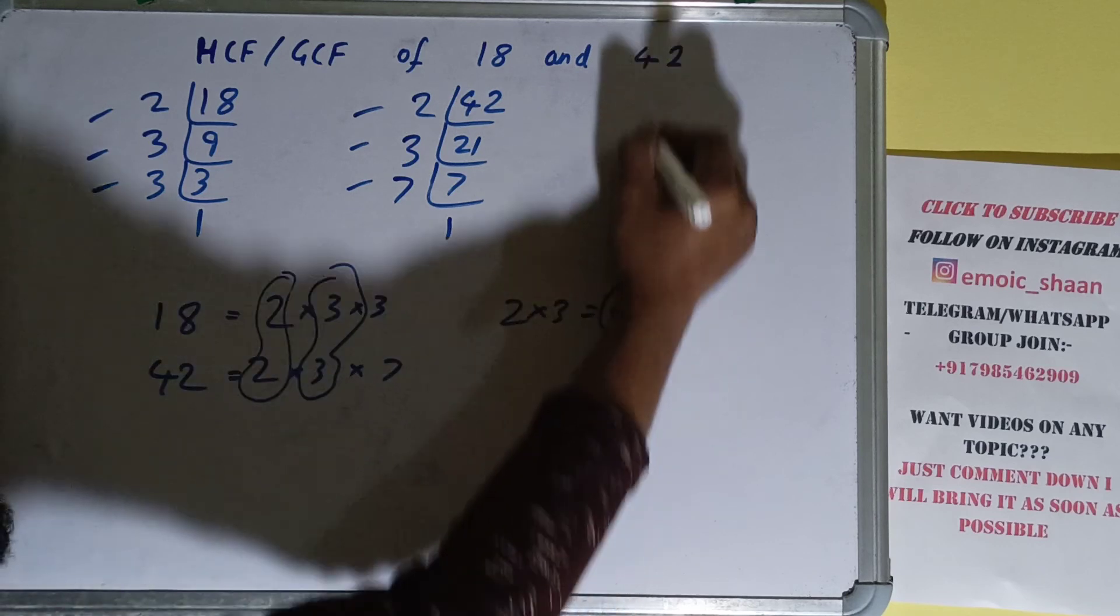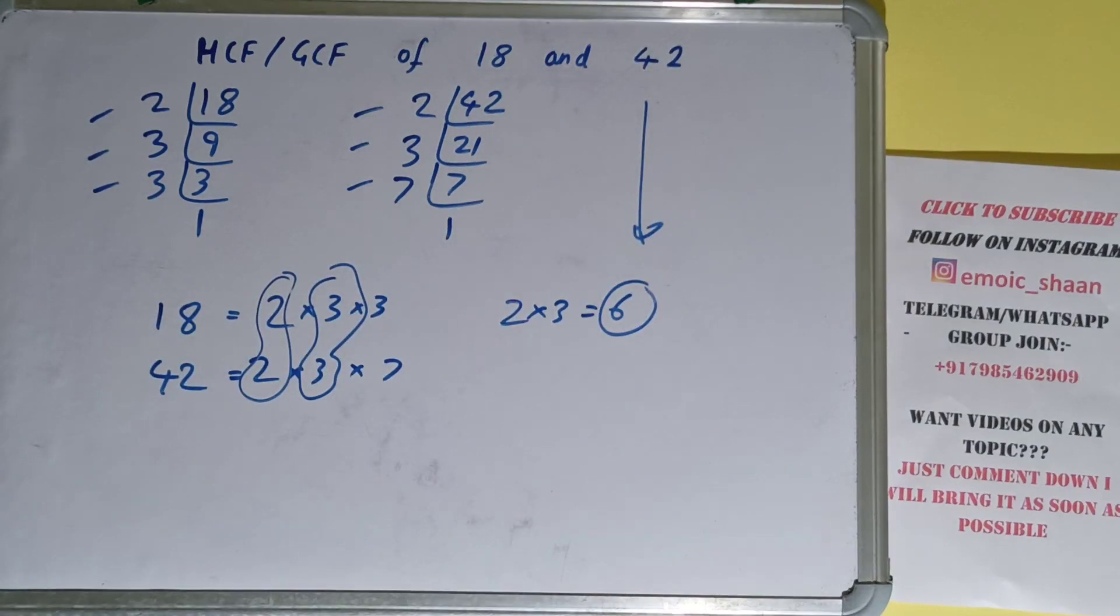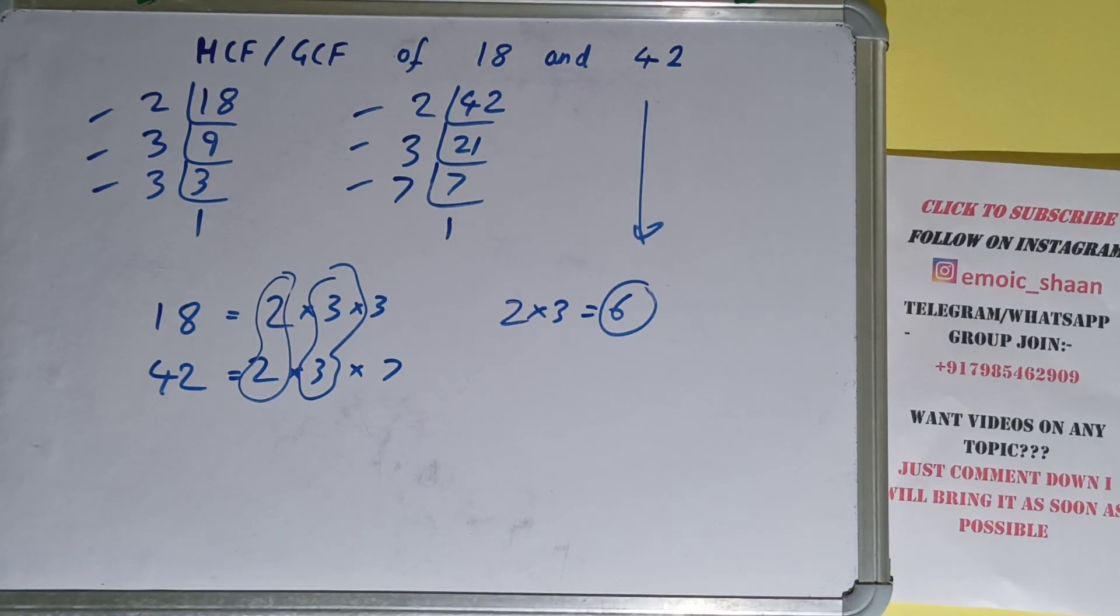So you can say that the HCF or GCF of the numbers 18 and 42 is 6. That's all for this video. If you found it helpful, please hit the like button, consider subscribing, and thanks for watching.